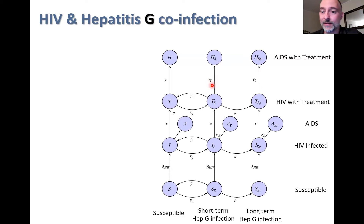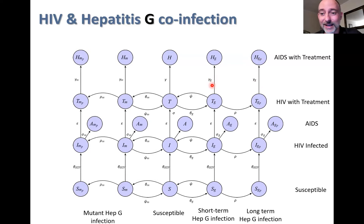By increasing the rate at which people might be infected with hepatitis G and evaluating its benefit, the big idea is that people infected with hepatitis G take much longer to progress to AIDS. To investigate evolutionary aspects, we need to consider a mutant strain of hepatitis G that might cause death or have negative effects. This means duplicating all of the structure, ending up with a system of 25 differential equations to describe HIV, wild-type hepatitis G, and mutant hepatitis G.